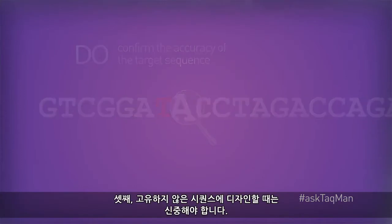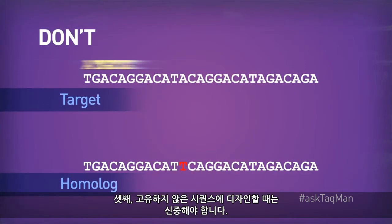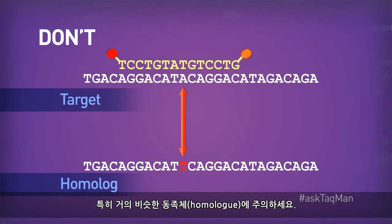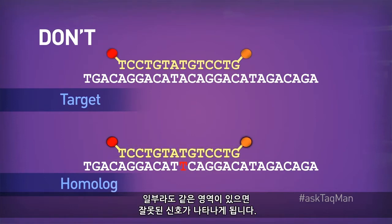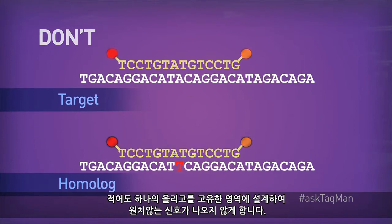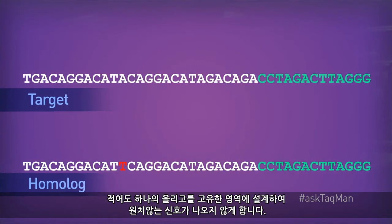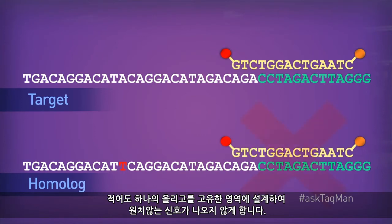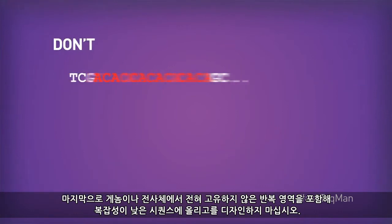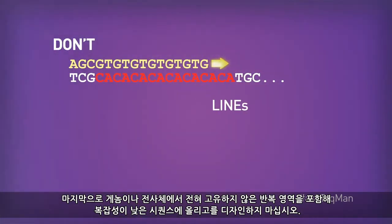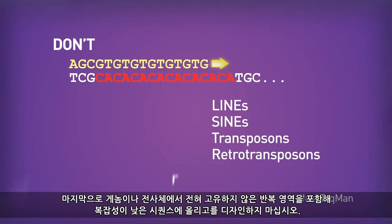Third, be careful about designing to sequences that aren't unique. Be especially mindful of homologues, which often differ very little from the sequence of interest and might therefore cause erroneous signal. Try to always design at least one oligo to a region that's unique enough so that your assay won't give unwanted signal. Finally, you never want to design oligos to low-complexity sequence, including repetitive regions that certainly won't be unique in your genome or transcriptome.